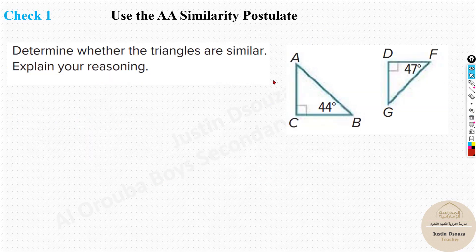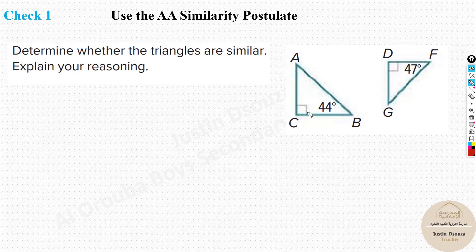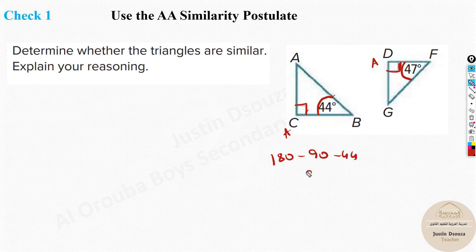Now let's look at the second problem - please try to pause the video and solve it yourself first. In this problem, both triangles have a 90° angle marked, so one pair of angles is already equal. One triangle has a 44° angle, and the other has a 47° angle. We need to find the third angles.